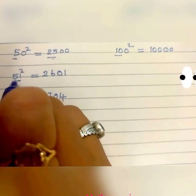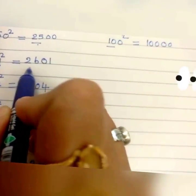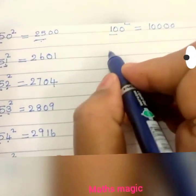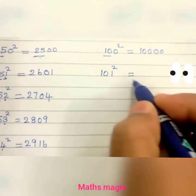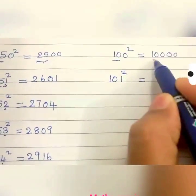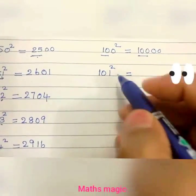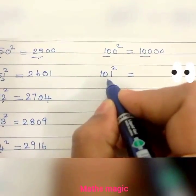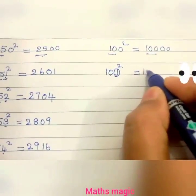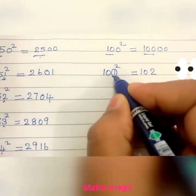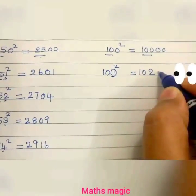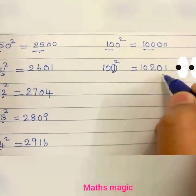For 101 squared: similar to how we did 51 squared by adding 1 to 25, here we take 100 and add double the 1. Double 1 is 2, so 100 plus 2 is 102. Then take the square of 1, which is 1, written as a 2-digit number: 01. So 101 squared is 10,201.